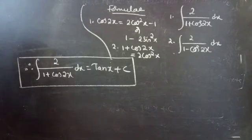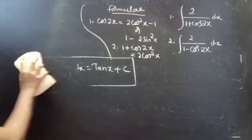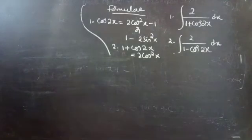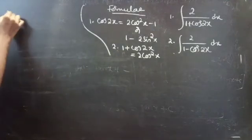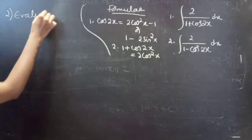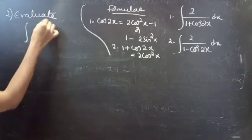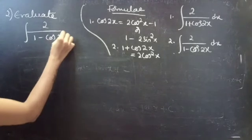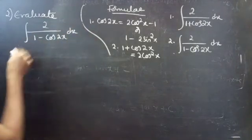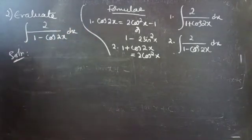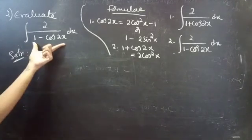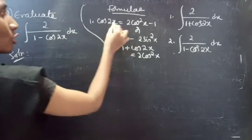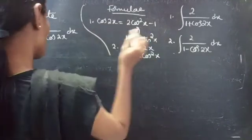Now coming to the second problem: evaluate integral 2 by 1 minus cos 2x into dx. In the denominator we have 1 minus cos 2x.